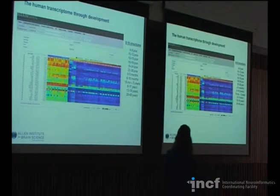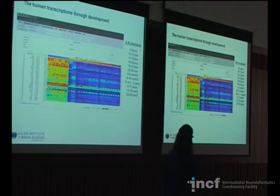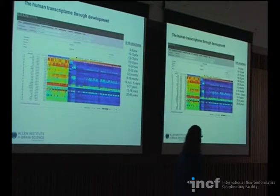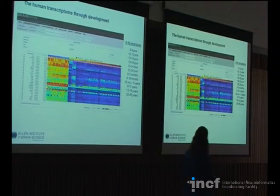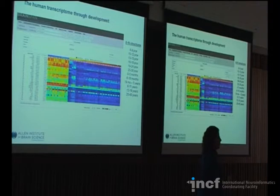This project through Yale has transcriptome data as well for development, so they have many more samples or cases to look at. We've got 8 to 16 structures depending on the level of development, across 12 different time periods. You can go in, look at the three earliest time points, and ask for differential expression to find genes involved in a specific developmental time point.